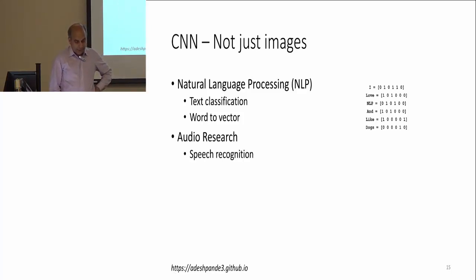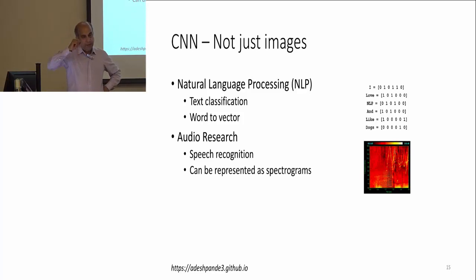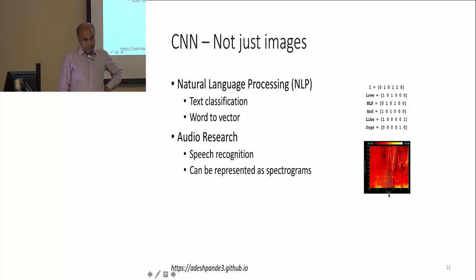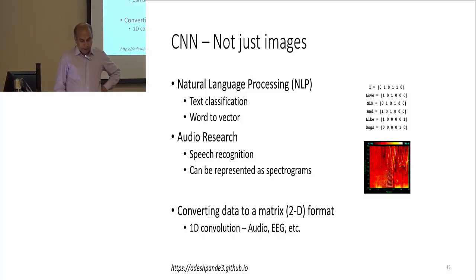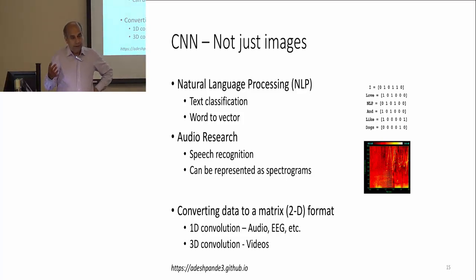CNNs have also impacted audio — you can apply speech recognition. Audio is a one-dimensional signal, but you can look at frequency information and compute what's called a spectrogram, which looks like an image, and then treat it like an image in a CNN. The main point is that you are converting data into a 2D matrix. 1D convolution can be applied to audio, EEG, and other modalities, and extended to 3D for video.